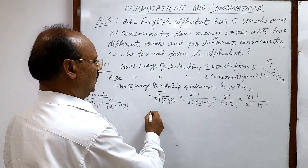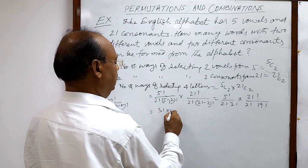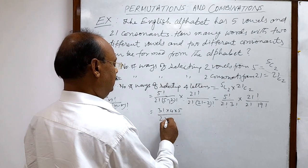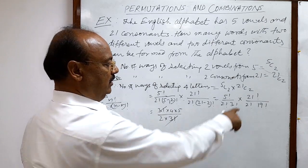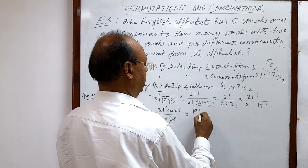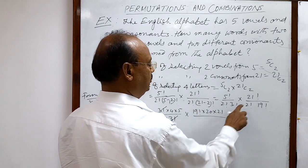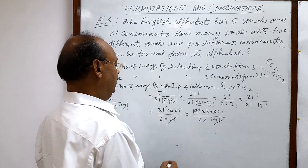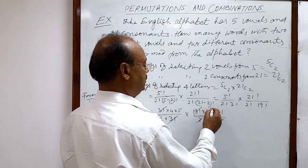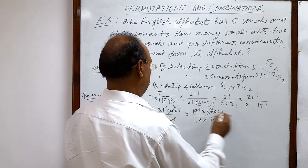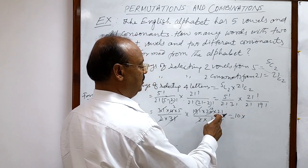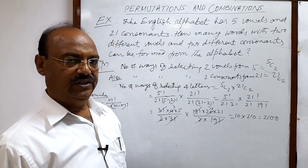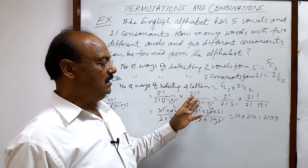We can calculate this easily. 5! can be written as 3! × 4 × 5, and 2! = 2, so the 3! cancels, giving 5 × 2 = 10. For 21C2, 21! = 19! × 20 × 21, and 2! = 2, so 19! cancels, giving 21 × 10 = 210. Therefore 5C2 × 21C2 = 10 × 210 = 2100. This is the number of ways of selecting 4 letters — 2 vowels and 2 consonants.